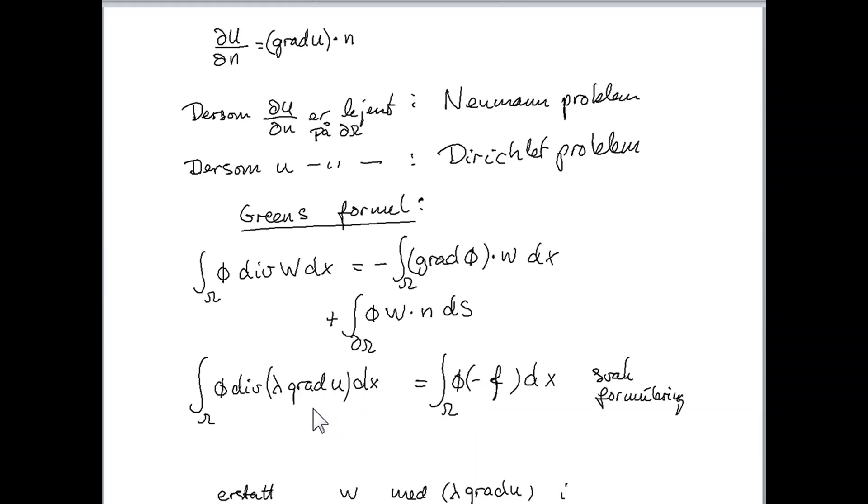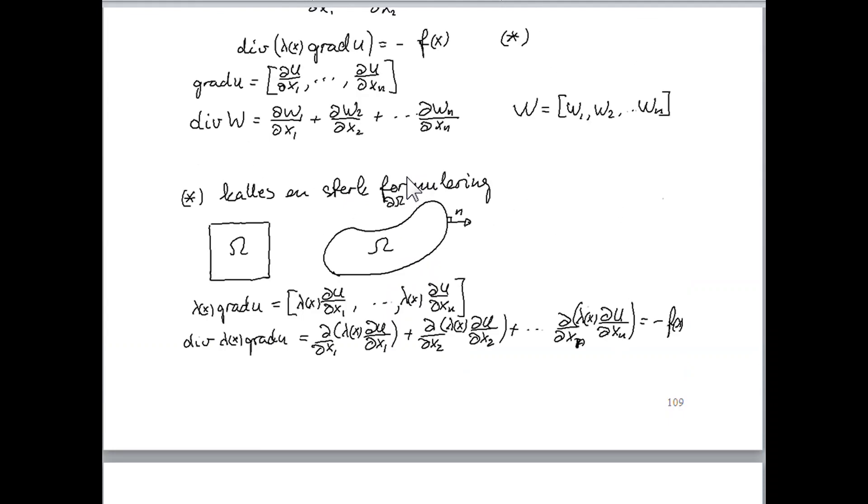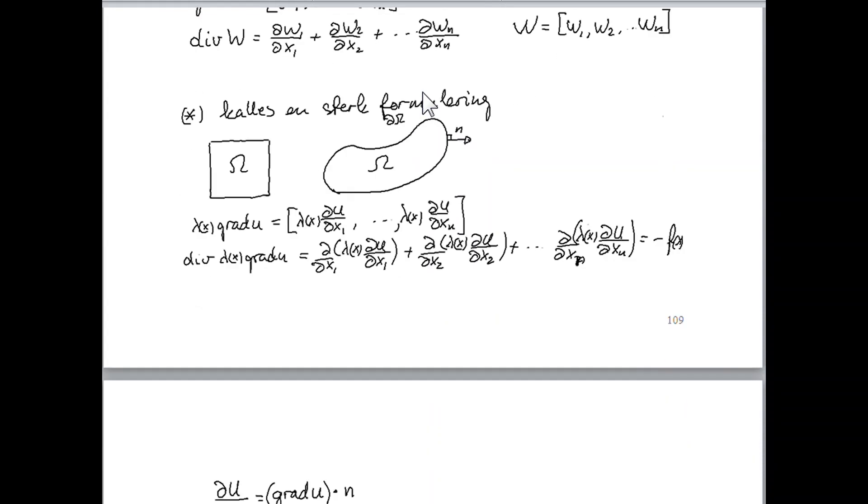So if we do the following: We take the Poisson equation, or the generalized Poisson equation, which is of this form, we call it the star equation, and we, on both sides, multiply it with the function phi. Then we get a new identity, and integrating this equation on both sides over the space omega, we obtain, by using Green's formula, the following.